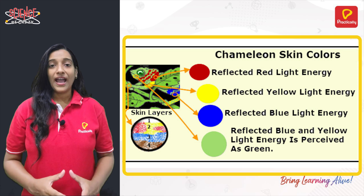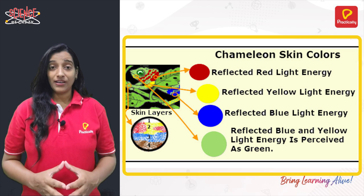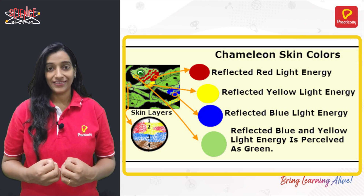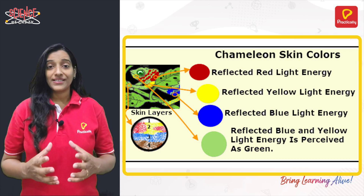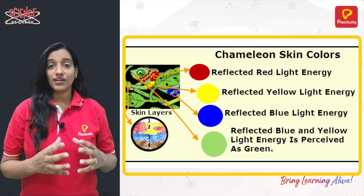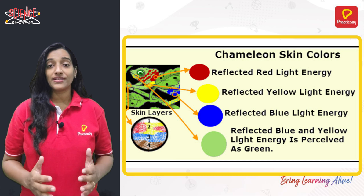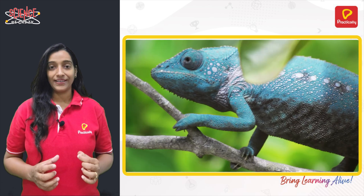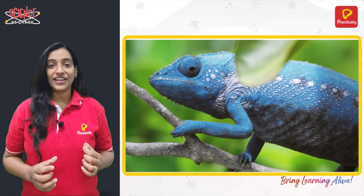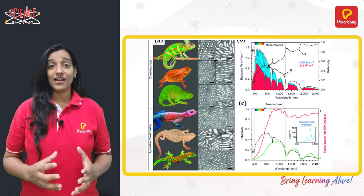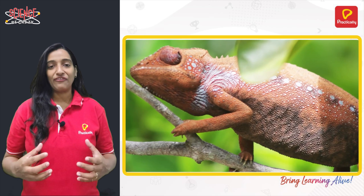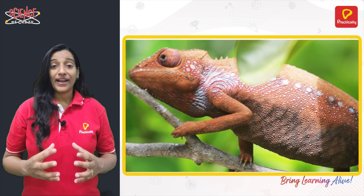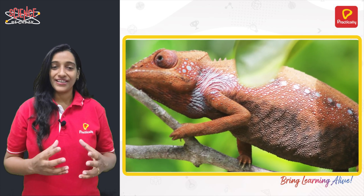Depending on the mood and temperature in the surrounding, the chameleon can change its coloration. Whenever the nanocrystals are arranged closer together, they reflect shorter wavelengths of light, resulting in a blue coloration. When the cells are arranged far away, they reflect longer wavelengths of light and we observe brighter shades like red, orange, yellow, etc.